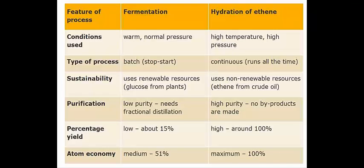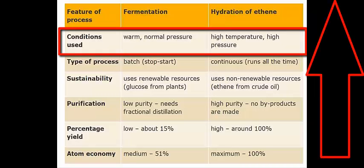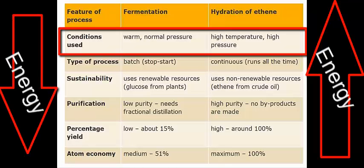You will be expected to highlight the advantages and disadvantages of each method of production of ethanol. We will first compare the conditions used. For the hydration of ethene, the high pressure and temperatures require a lot of energy, meaning fossil fuels burning and the production of carbon dioxide and other pollution. In contrast, fermentation conditions are 30 degrees C and normal atmospheric pressure, requiring much lower energy, and therefore in theory produces less carbon dioxide.